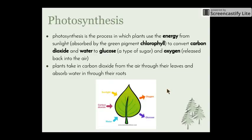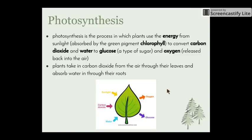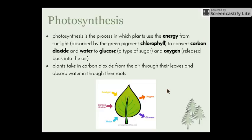Photosynthesis is a process by which plants use the energy from sunlight — UV light — which is absorbed by the green pigment in the plants called chlorophyll. Chlorophyll is found in special parts of the plant cells called chloroplasts. Only plant cells contain chloroplasts; they're the only type of cells able to undergo photosynthesis. In the chloroplasts, carbon dioxide and water are converted into glucose and oxygen, which is released back into the air. Plants take in carbon dioxide through the leaves and absorb water up through the roots.